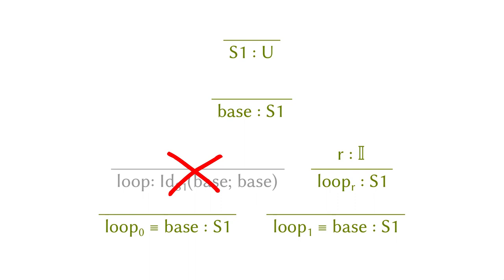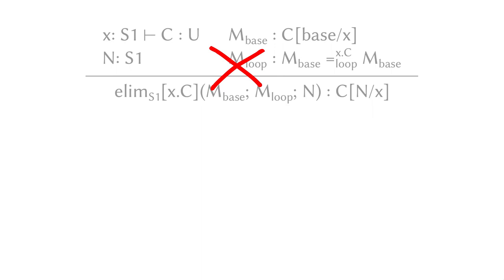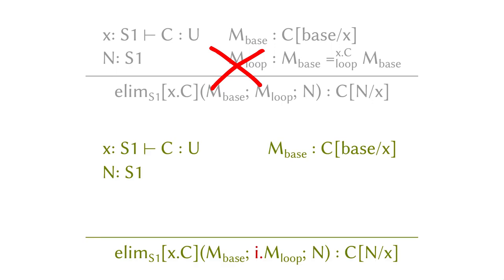So those are the two constructors. Now the next question is how to use an element in a circle. Eventually we still want something very similar: an Elim-S1 with a motive and with two cases, which should prove the instance of the theorem at N. The motive C is the theorem you want to deal with, indexed by the circle, and you have an element N in the circle. We also have a proof about the base case.